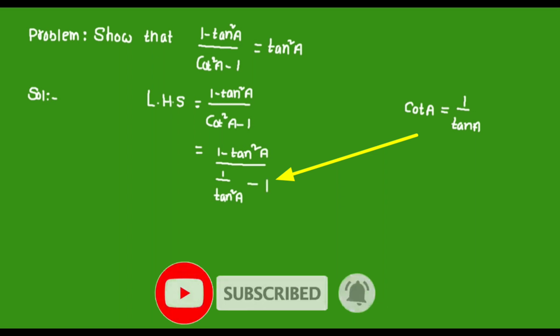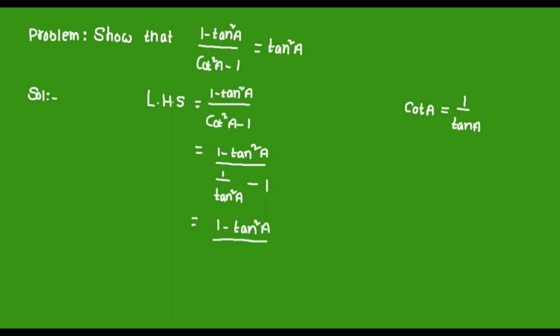It can be written as (1 - tan²a)/(1/tan²a - 1). Here there is no need to change the numerator, but the denominator 1/tan²a - 1 can be written as (1 - tan²a)/tan²a.